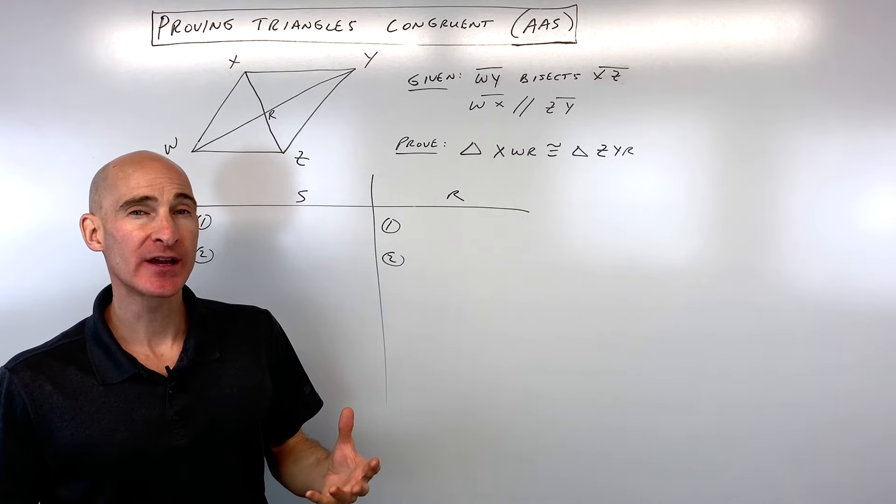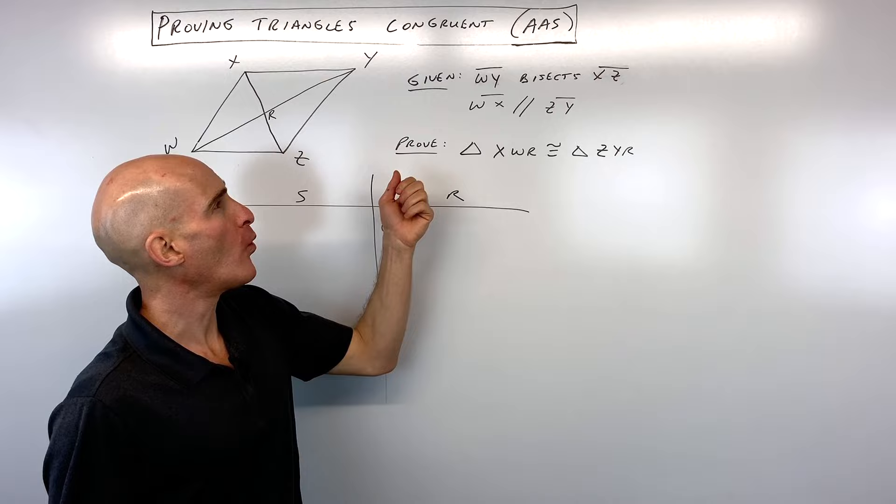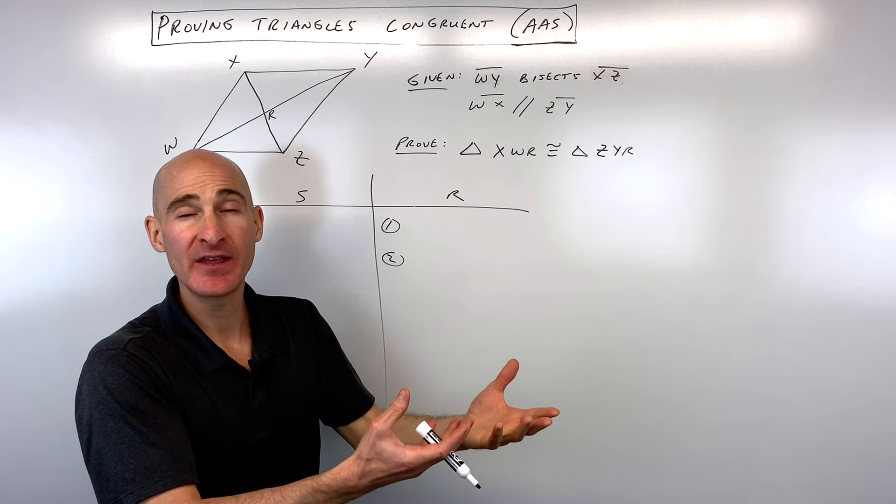I want to show you a little method that I use to work through these proofs to make it a little bit easier and give you a process. So the first thing I do is I look at the givens and I say to myself, why are they telling me these givens? These are generally clues or hints, something that you can figure out and then add as a statement in your proof.